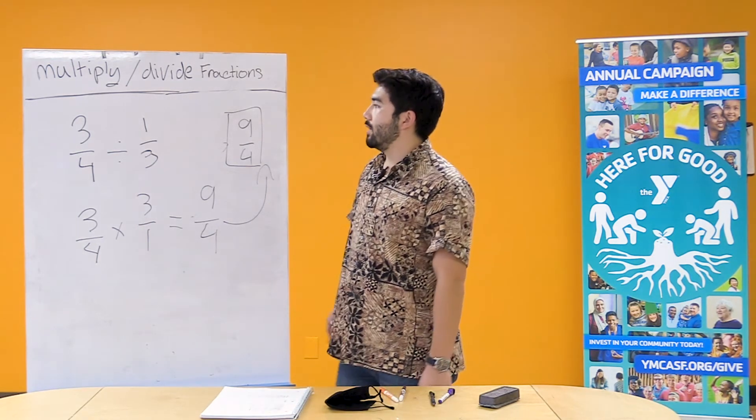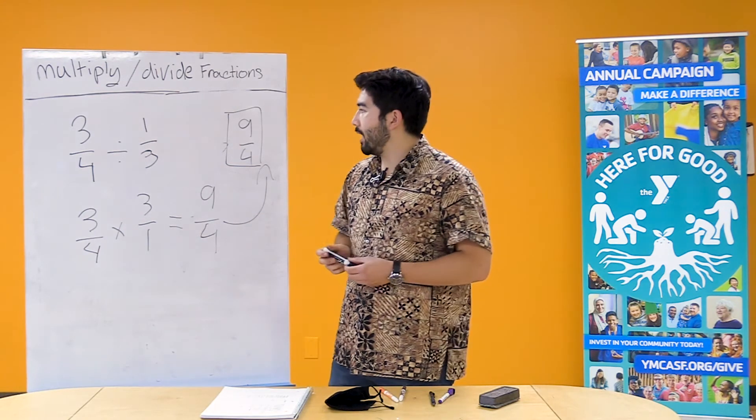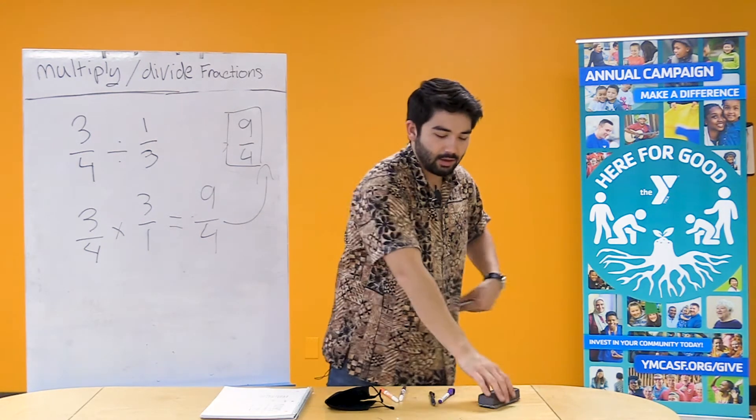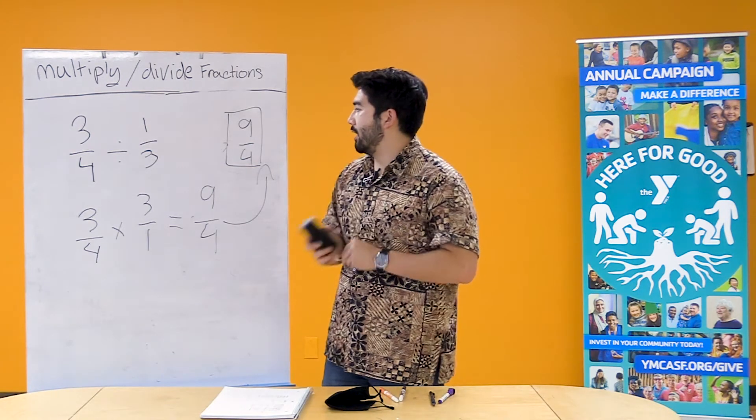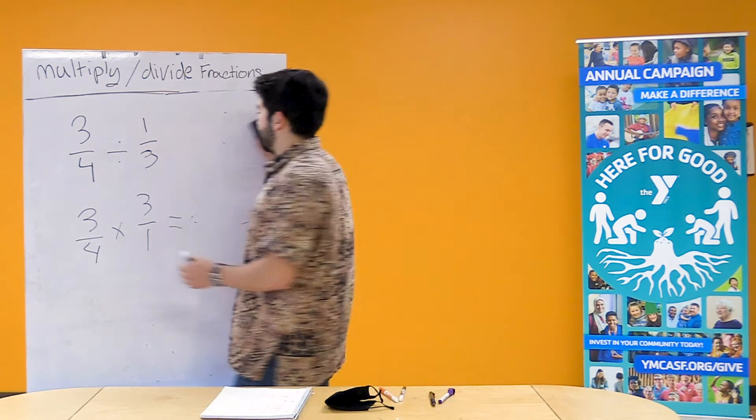So 9/4 is gonna be answer for 3/4 divided by 1/3. Yeah. Let's do one more really quickly just so we can really solidify our flipping and multiplying. So I'm gonna erase this and give us a new problem.